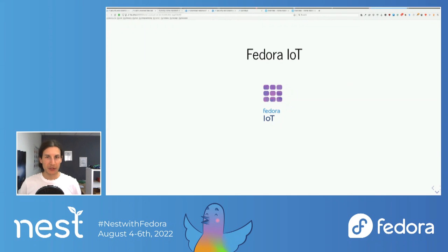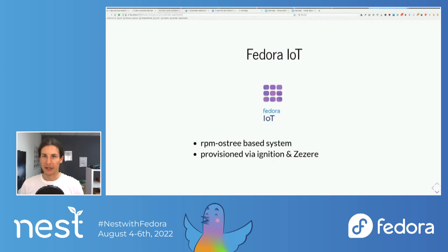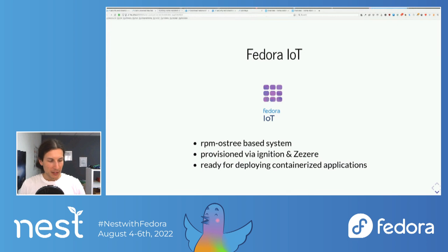With that, let's go to Fedora IoT. Fedora IoT is an edition of Fedora powered by rpm-ostree, which is this fancy new thing that allows you to have an immutable base OS. It's a very slim system — very hard to break, very lightweight. It supports provisioning via Ignition. And Zezere — that's a really cool system, we'll see it in a minute. It's built for deploying containerized applications meant for IoT devices. You can put it on ARM or x86. If you're curious, go to the Fedora homepage.